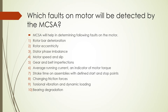The fourth question: which parts of a motor are detected by Motor Current Signature Analysis (MCSA)? MCSA helps in determining the following: rotor wall deterioration, rotor eccentricity, stator phase imbalance, motor speed and slip, gear and belt imperfections, average running current as an indicator of motor torque, stroke time on assemblies with defined start-stop points, changing friction forces, torsional vibration, dynamic loading, and bearing degradation.